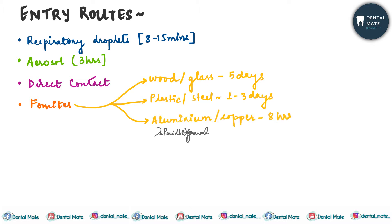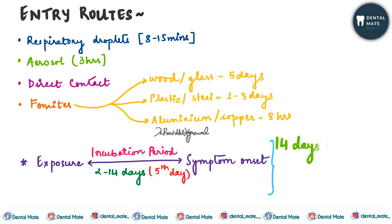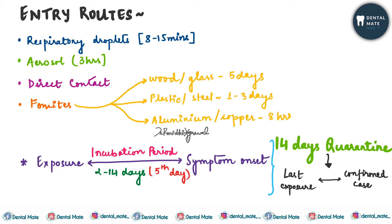The incubation period is the time between exposure and symptom onset. For SARS-CoV-2 it is 2 to 14 days, with a median of the 5th day. So symptoms can typically be seen by the 5th day, and this is the reason for the 14 days of quarantine from the last exposure to a confirmed case.